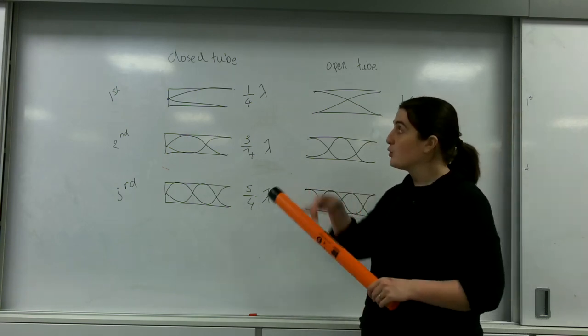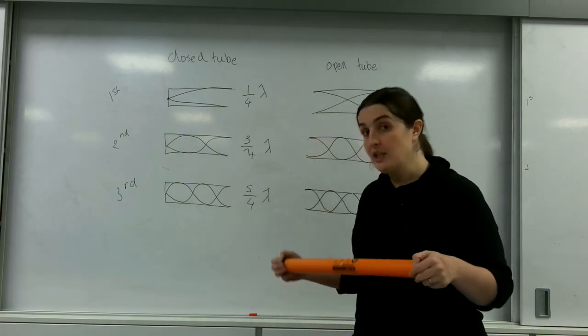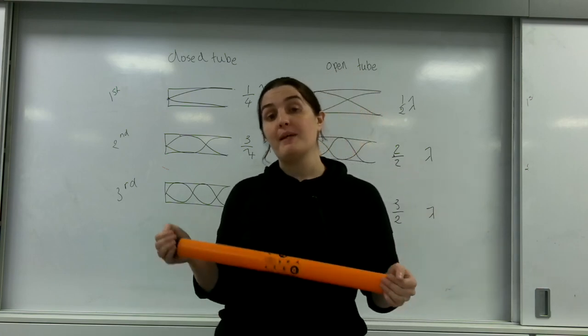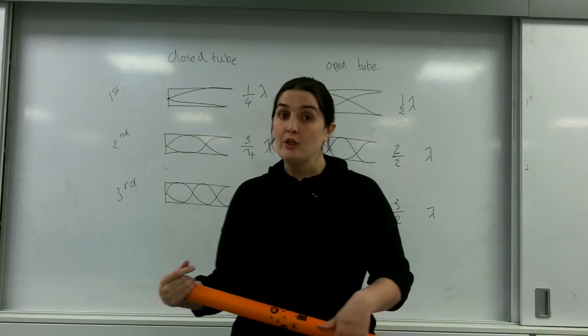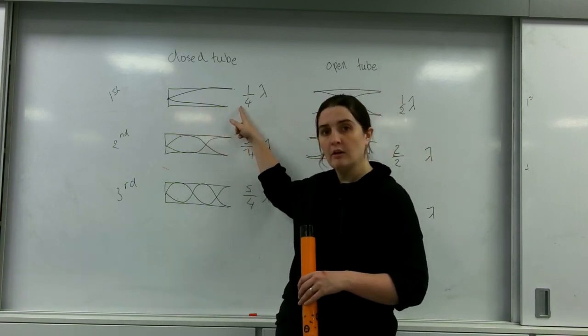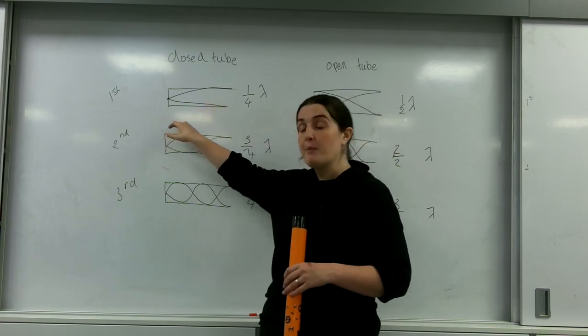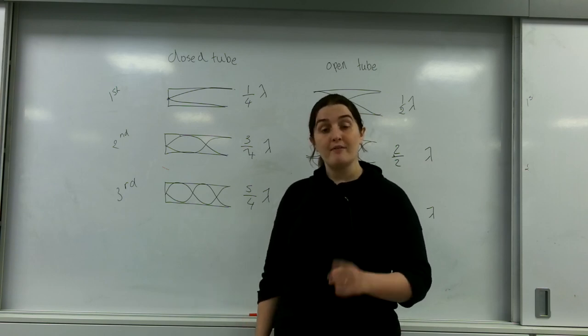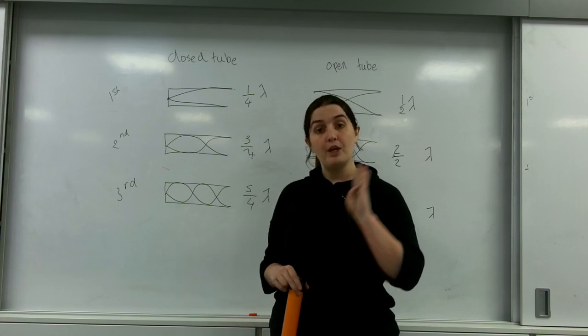It is important that you're able to identify and draw each of these harmonics. And also from these, be able to determine the actual wavelength of the wave itself. For example, if I told you this tube was one meter long, the first harmonic would represent a quarter of the wavelength. So a quarter of my wavelength is one meter, so my whole wavelength would be four meters.